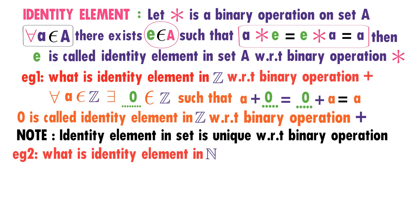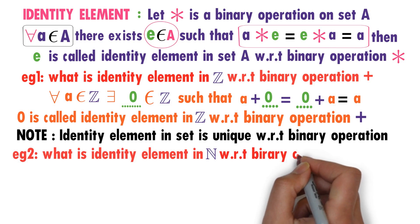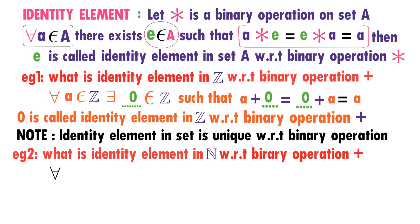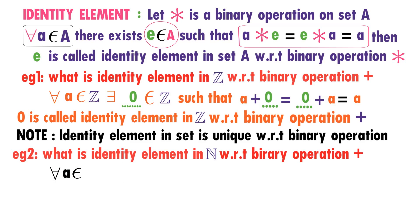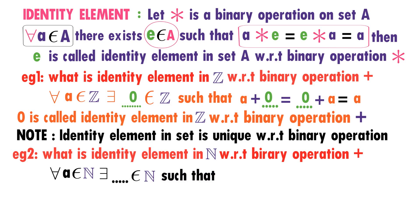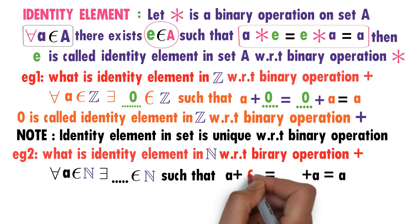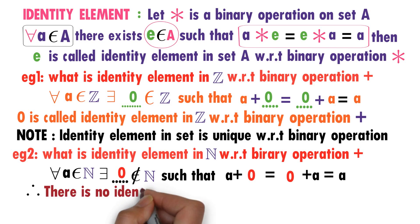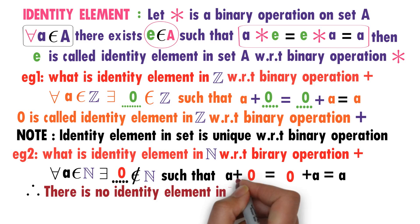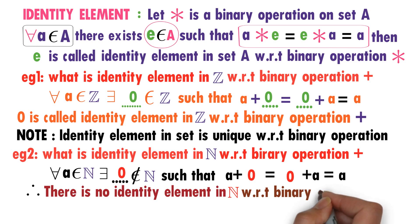What is the identity element in natural numbers N with respect to binary operation addition? For any A belonging to N, we need to find E in N such that A plus E equals E plus A equals A. We observe that A plus 0 equals A and 0 plus A equals A, so 0 satisfies the condition. However, 0 is not a natural number. Therefore, there is no identity element in N with respect to binary operation addition.